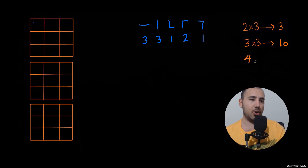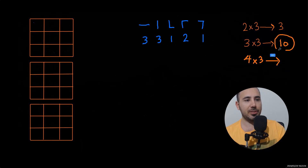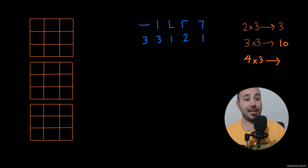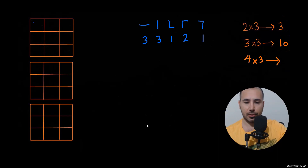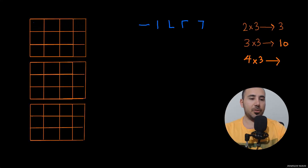The next step is a four by three grid. Once we do it, we'll use the previous information — the two by three result of three and the three by three result of ten. That's why it's called recursive tiling: we need the previous information and add it up.